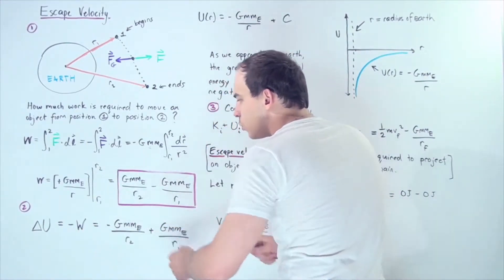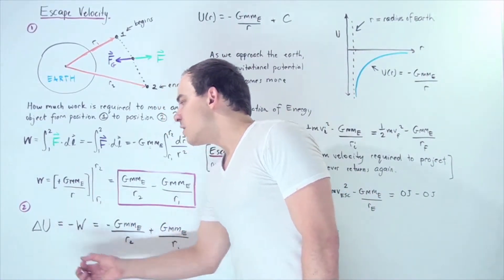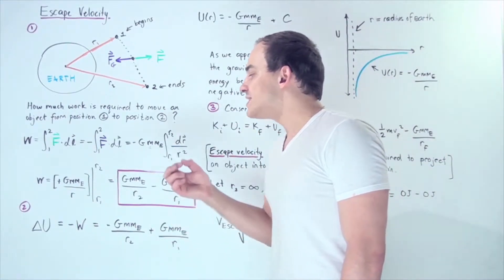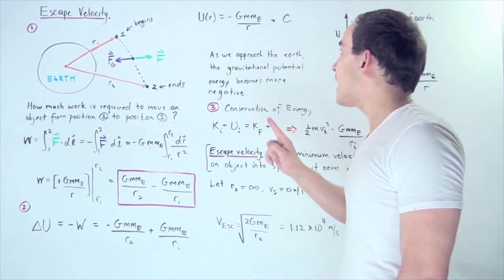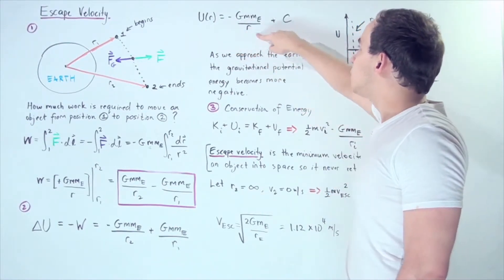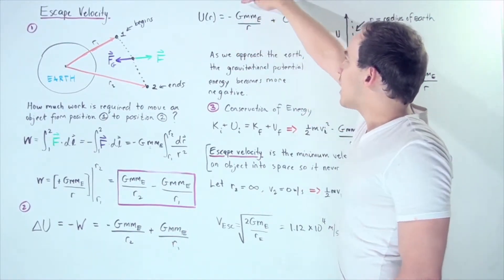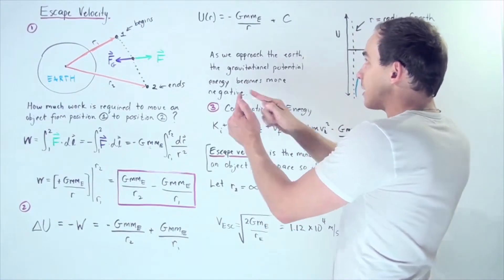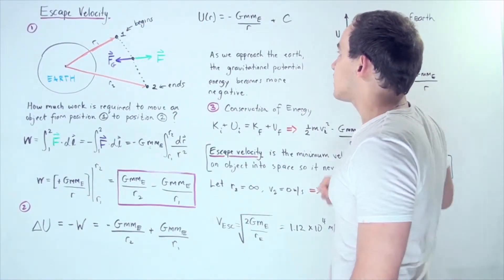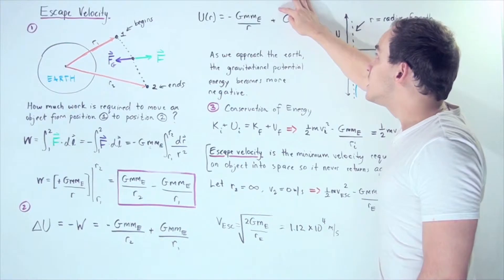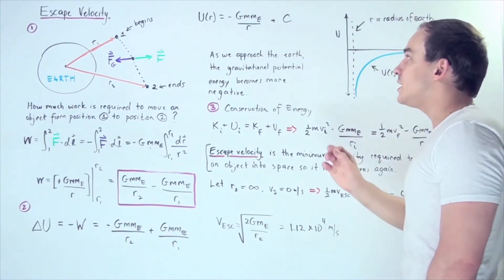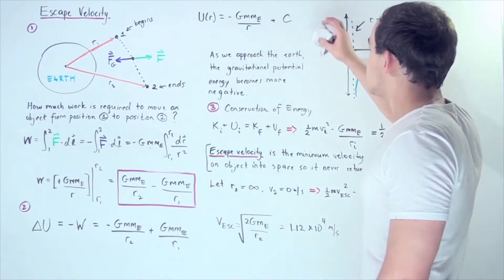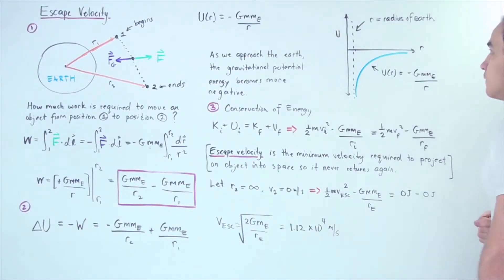This gives us the formula for the change in gravitational potential energy. If we simply want the gravitational potential energy as a function of distance R, we use: negative G times M times M_E divided by R, where R is the distance, M is the mass of the object, and M_E is the mass of the Earth, plus an arbitrary constant. We can choose that constant to be zero, which gives us the simplified formula.